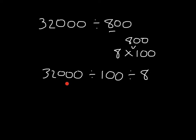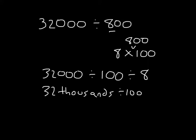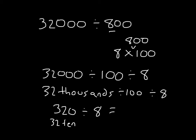This should look familiar — we take 32,000 and divide it by 100. How many hundreds are there in 32,000? When we take 1,000 and divide it by 100 we get 10. So 32,000 divided by 100 is 320. But remember, we're still dividing by 8. So we have 320 divided by 8. 320 divided by 8 is 32 tens divided by 8 — 32 divided by 8 is 4, and we have 4 tens as our answer, which is 40.